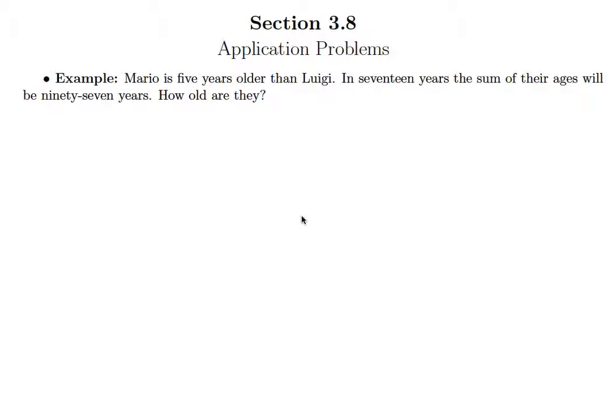So this one says Mario is five years older than Luigi. In 17 years the sum of their ages will be 97 years. How old are they?